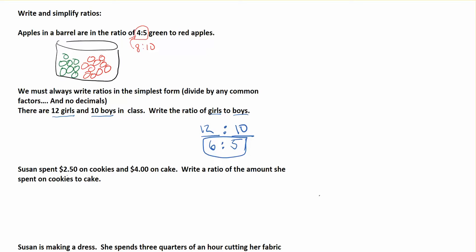Here's another example. Susan spent $2.50 on cookies and $4 on cake. Write the ratio of the amount she spent on cookies to cake. Order matters, so we're going to put cookies first, then cake. Cookies is $2.50, and cake is $4. Here I want to think about getting rid of decimals, because there's not really any units in this either. How can I get rid of $2.50?